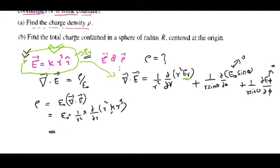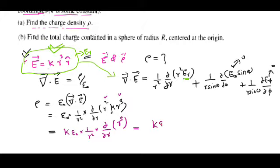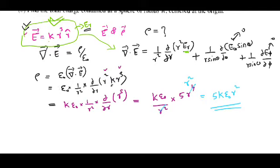Taking k outside, ρ = kε₀ × (1/r²)(∂/∂r)(r⁵). Differentiating: ∂/∂r(r⁵) = 5r⁴. So ρ = kε₀ × (1/r²) × 5r⁴ = 5kε₀r². The charge density is ρ = 5kε₀r².